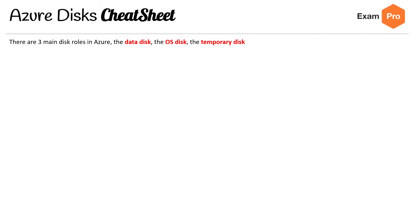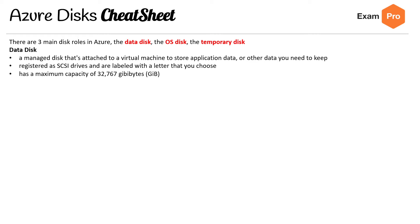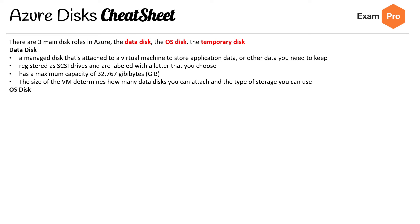On to the second slide. There are three main disk roles in Azure: the data disk, the OS disk, and the temporary disk. The data disk is a managed disk attached to a virtual machine to store application data or other data you need to keep. Registered SCSI drives are labeled with a letter that you choose. It has a maximum of 32 gigabytes. The size of the VM determines how many data disks you can attach and the type of storage you can use.